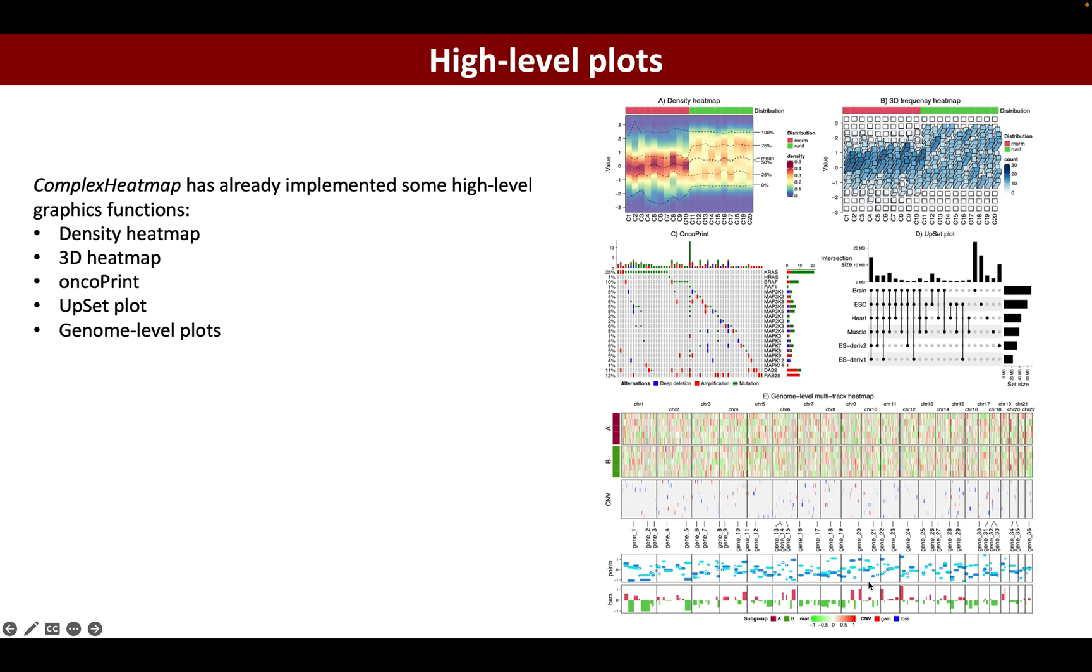Figure D is the upset plot which visualizes the intersection of several sets. Figure E is a genome-level plot where each column corresponds to a chromosome and you can add many different genomic signals to the plot.